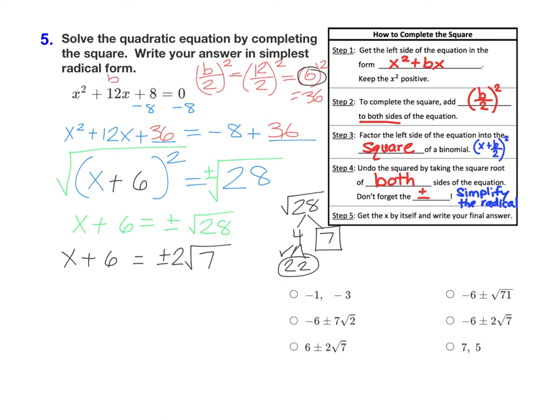And now we're one step away here. For step number 5, we just need to get the x by itself. Right now, it's x plus 6. So to get rid of that plus 6, we can just subtract 6 on both sides. Now, we have x equals negative 6 plus or minus 2 root 7 as our final answer. And then just find that answer in the multiple choice options, negative 6 plus or minus 2 root 7.